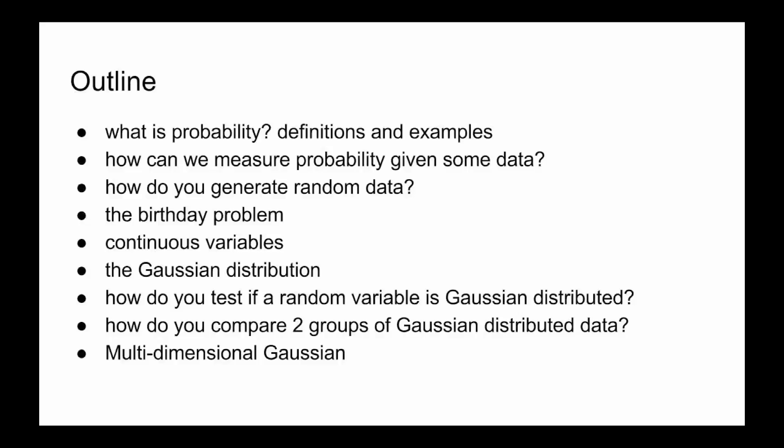In the next lecture, we'll extend the idea of probability from discrete variables to continuous variables. In the lecture after that, we'll talk about a special continuous variable distribution called the Gaussian distribution or the normal distribution.